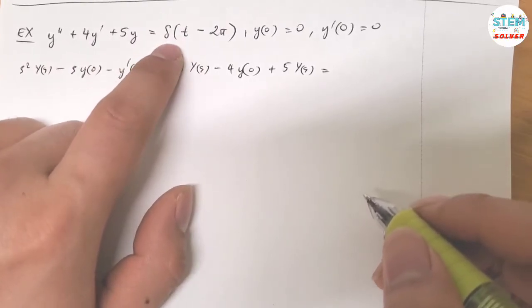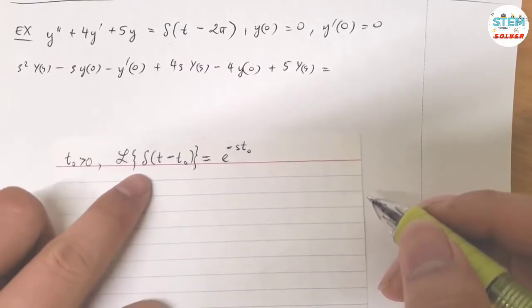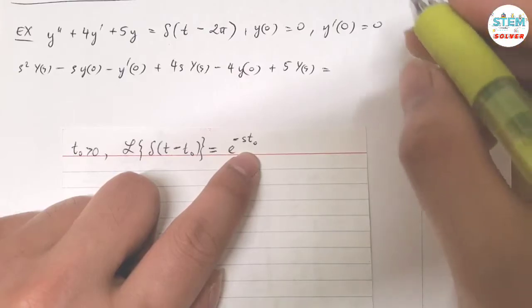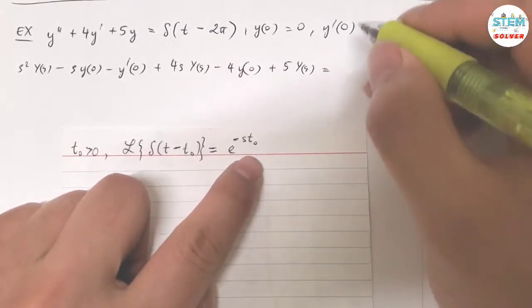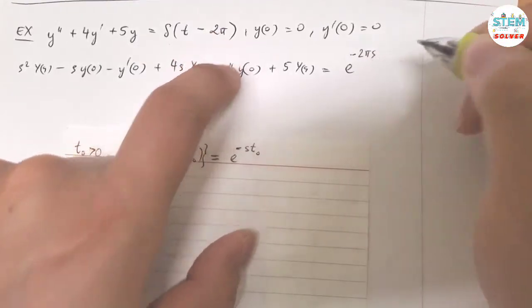You have delta, so this is called the Dirac delta function. And if you don't remember, the Laplace transform of Dirac delta function is equal to e to the negative sT₀. So whatever T₀ is, you just plug it in. So I have e to the negative 2πs.